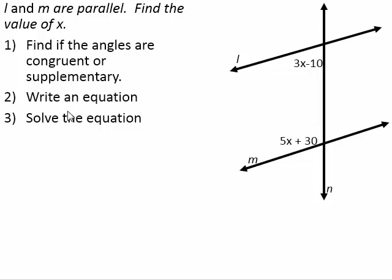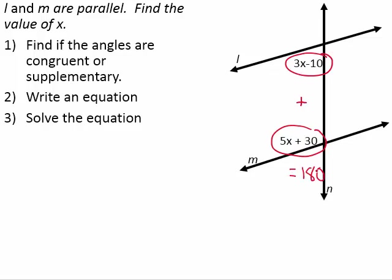You'll notice that 3x minus 10 and 5x plus 30 are same-side interior angles. Now if you remember, same-side interior angles are supplementary. That means that when we add them together, they should equal 180 degrees.